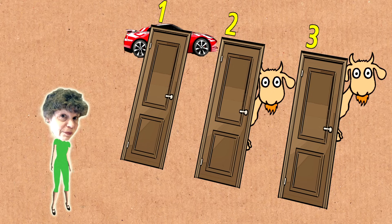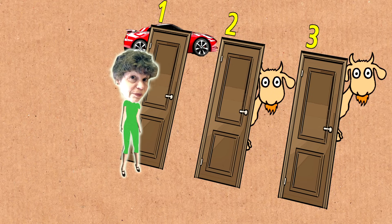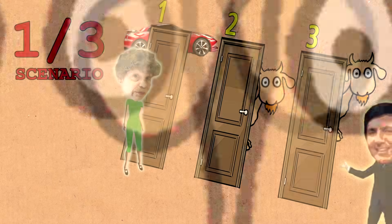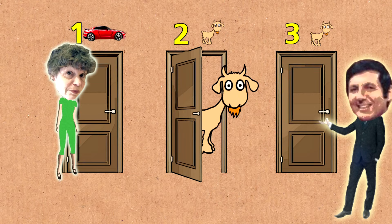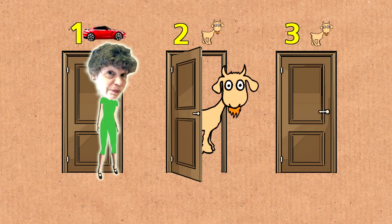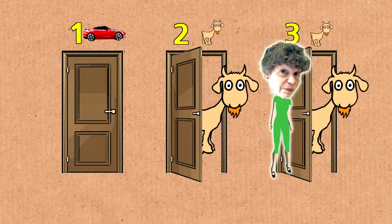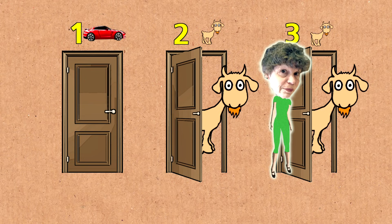Let me explain what happens. When you made that first choice, there was a one in three chance that the car was behind your door. In that situation, Monty had two goats he could have revealed from behind the other two doors. That's not very helpful, and of course if you then switched like I'm telling you you should, you'd have moved away from the car and lost. But let's be honest — there was only a one in three chance of that happening.